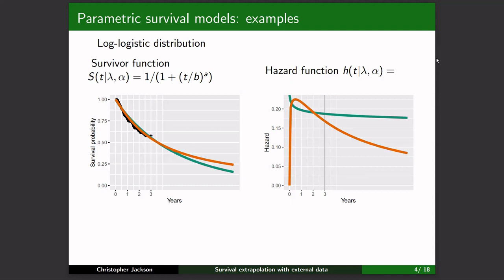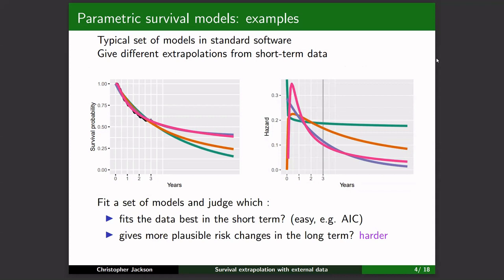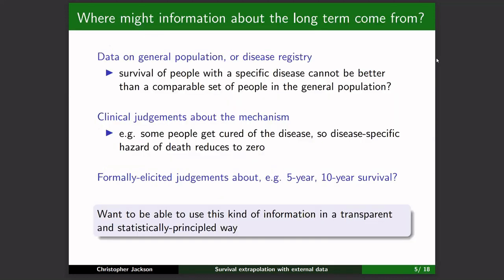So what do you do? How do you make a decision? A common practice is to fit all of the survival models that your software provides and see what the answers are under each. You can judge short-term fit using statistical measures like AIC. In the long term it's more difficult because there's more judgment involved. What we really want to do is build in data and information about the longer term.